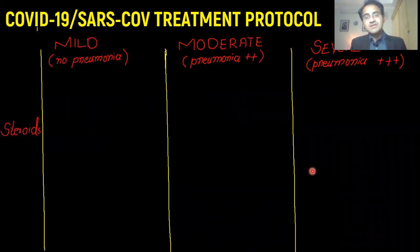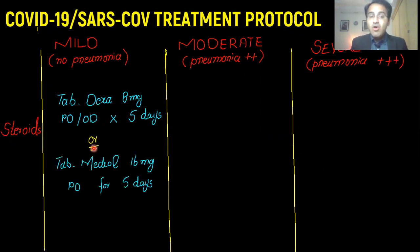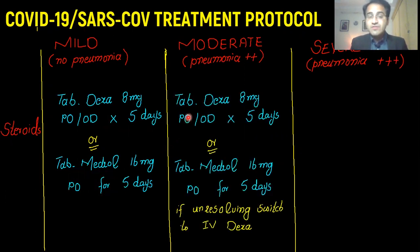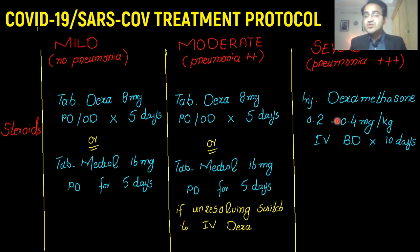Steroids are the most important thing in COVID-19 treatment. In moderate cases, give tablet dexamethasone 8 mg orally once daily for 5 days, or tablet methylprednisolone (Medrol) 16 mg orally for 5 days. If the patient is not getting better on oral dosage, switch to IV dexamethasone. In severe cases, start IV steroids directly — injection dexamethasone 0.2 to 0.4 mg per kg of body weight IV twice daily for 10 days.